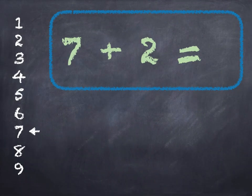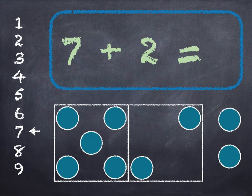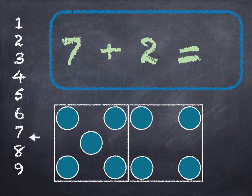7 plus 2. 7 in the box, add 2 on. 7, 8, 9. Start at 7 on the number line and go down 2. 1, 2. We get to 9. 7 plus 2 is 9.